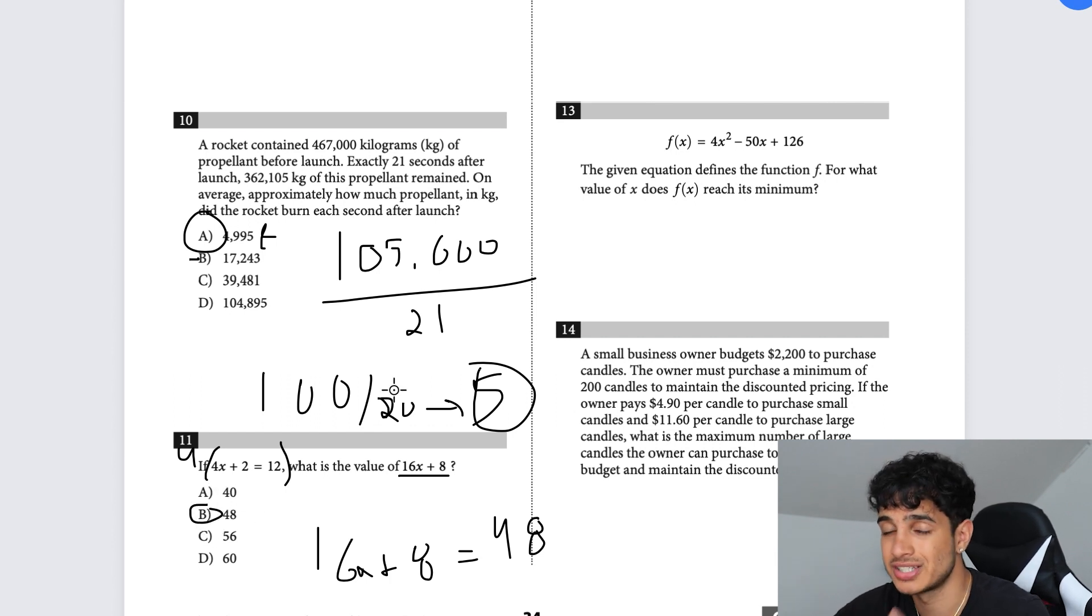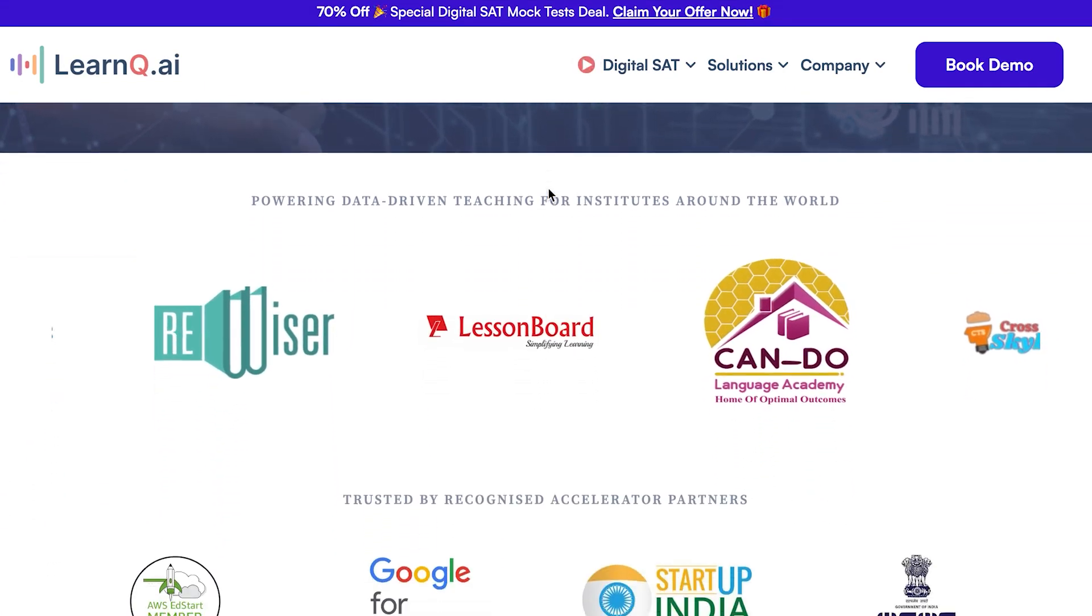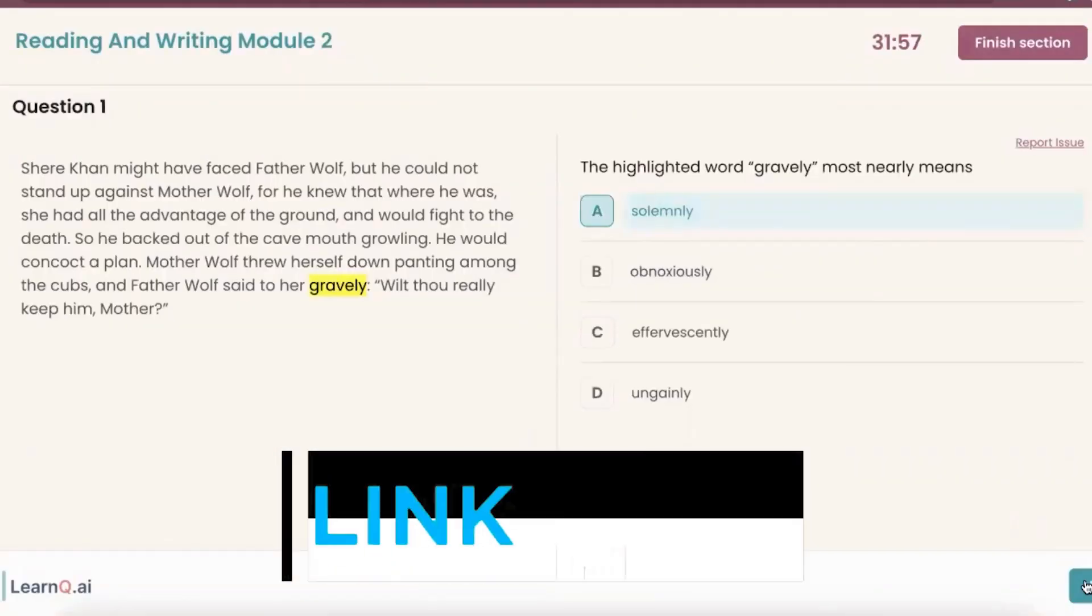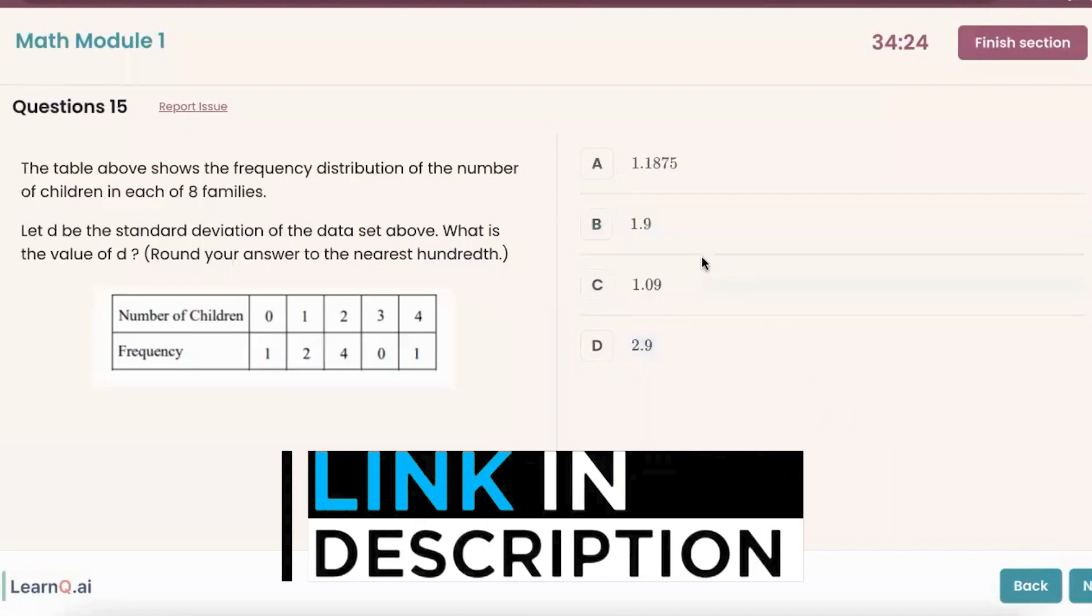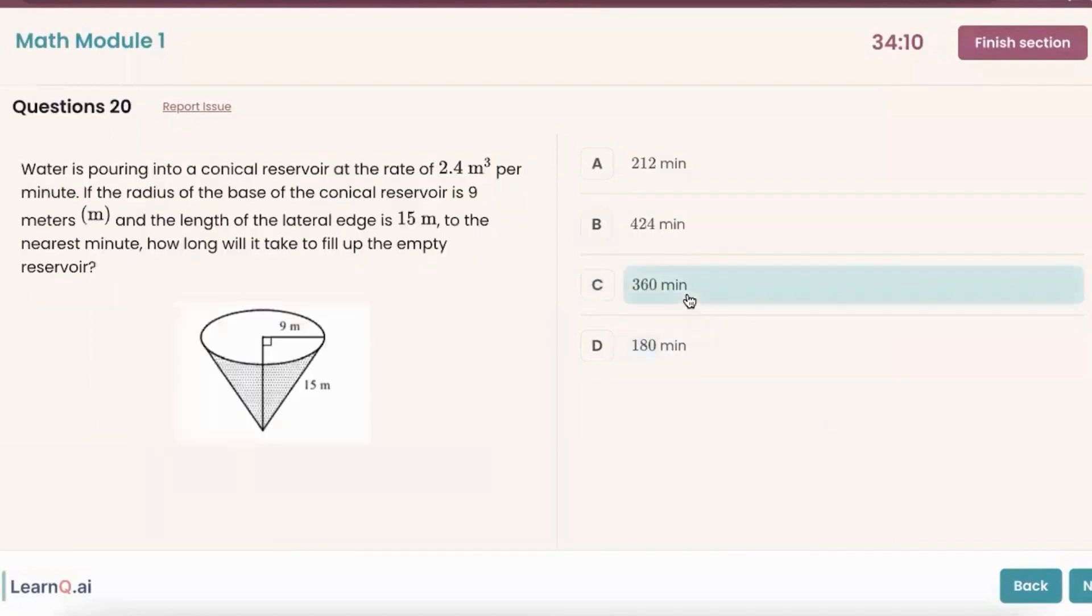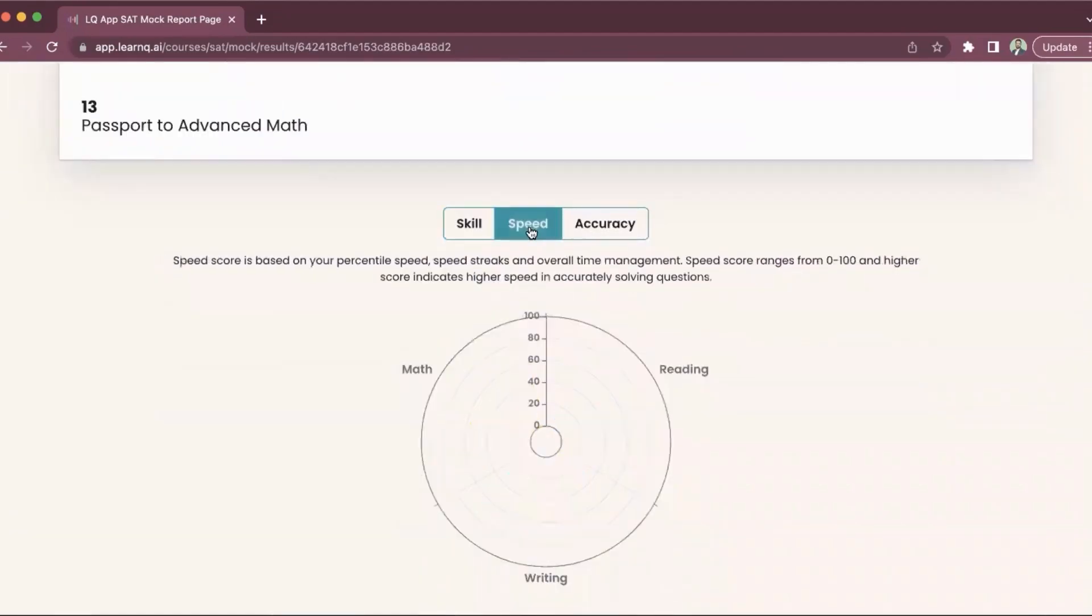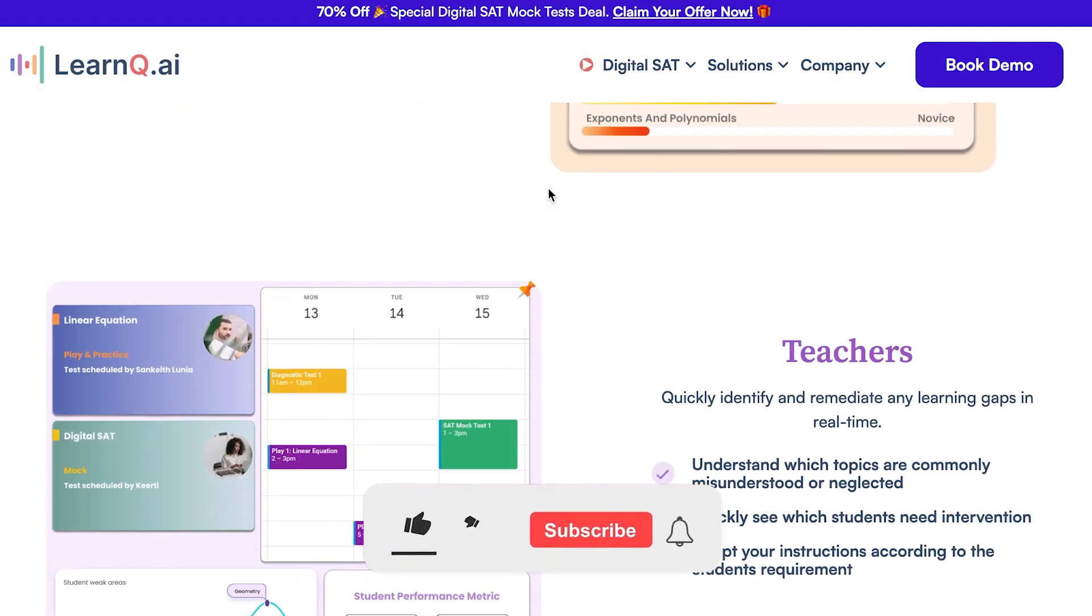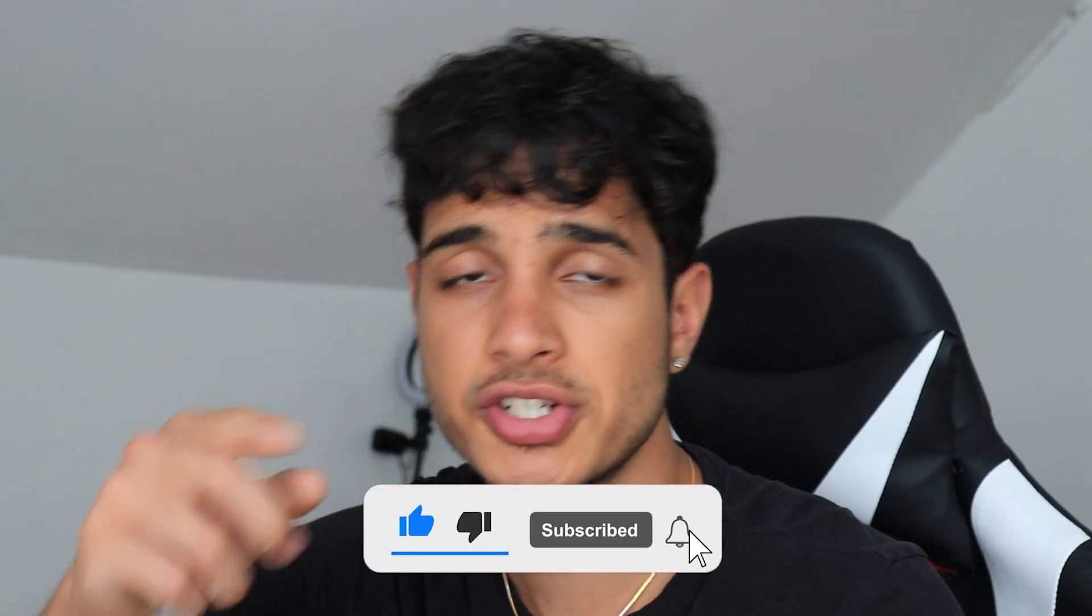That's how you do part one of the digital SAT math section. I've partnered with LearnQ.ai, which is like Khan Academy on steroids. If you purchase my course, you get the entire platform for free. It costs about 50 bucks normally, but you get unlimited features for life. Check that out in the link in the description below. Thank you for watching, peace.